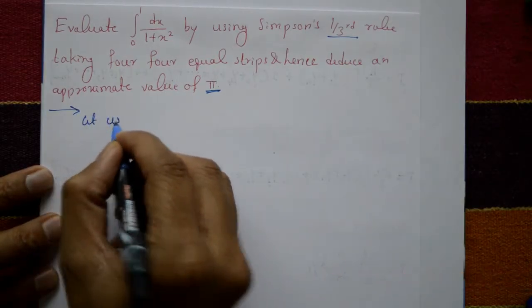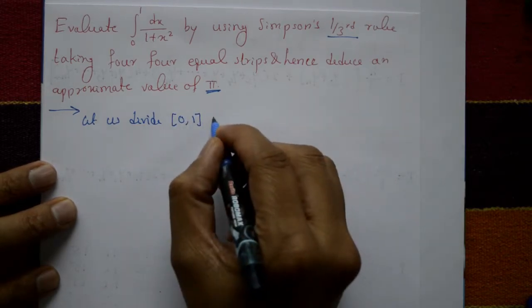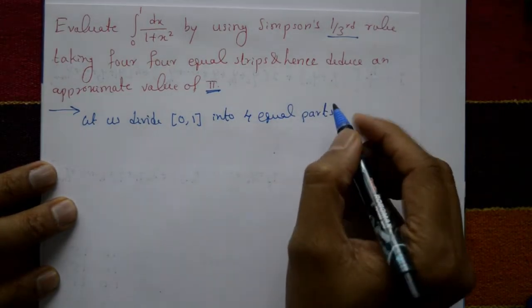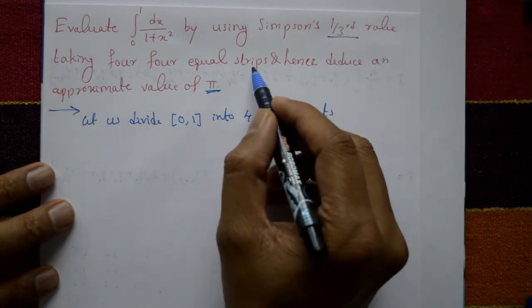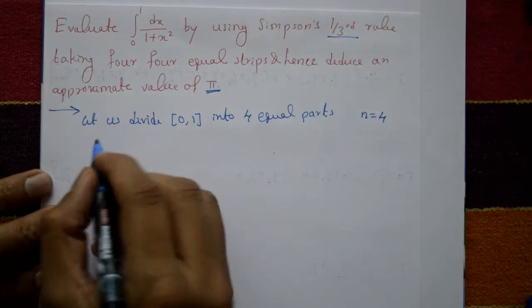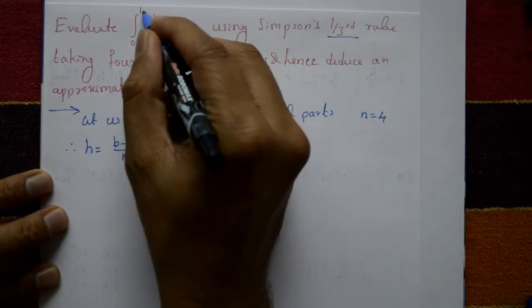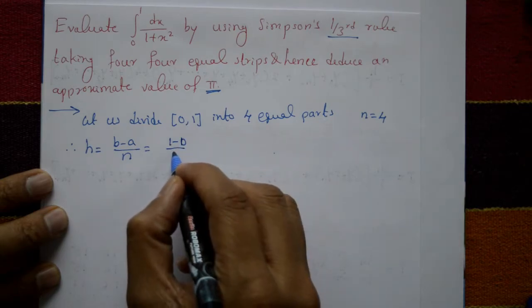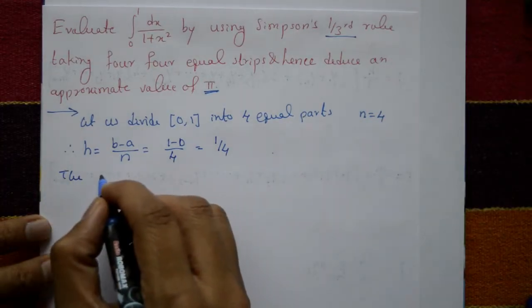Let us divide the interval 0 to 1 into four equal parts, taking four equal strips, so n is equal to 4. Therefore, h is equal to (b minus a) divided by n, which is (1 minus 0) divided by 4, so h equals 1/4.